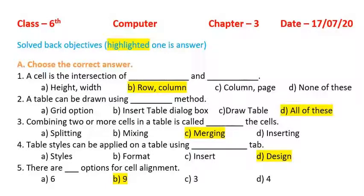Good morning students, today we are going to learn the back objectives of chapter 3 of computer. First one: a cell is the intersection of row and column.